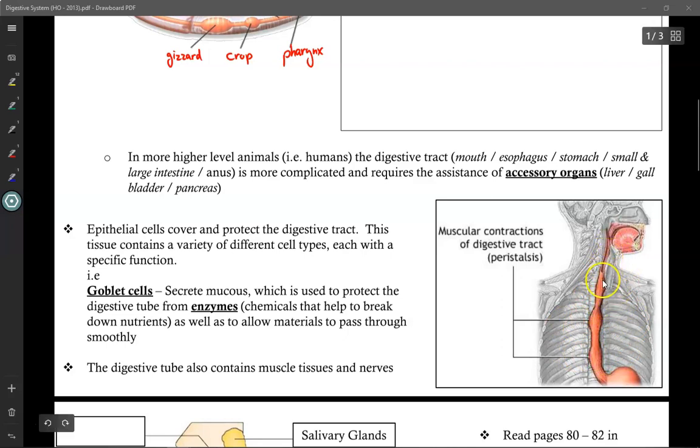Now, because food is constantly being pushed along the digestive tract and rubbing against the inside of the tube, epithelial cells are used to cover and protect the digestive tract. Now, this tissue contains a variety of different cell types, each with a specific function. For example, goblet cells secrete mucus, and the mucus is used to protect the digestive tube. First, this slimy mucus helps to lubricate the esophagus and also the rest of the digestive tract, so there's less friction with the food as it's being pushed along. Meanwhile, in the stomach, the mucus lines the interior so that the stomach acid that's there to break down the food doesn't break down the stomach itself, so the mucus gets broken down by the stomach acid instead of the cells of the stomach.